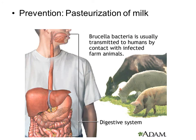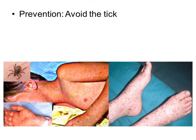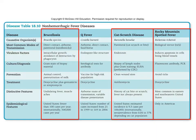Prevention of Brucellosis is through pasteurization of milk, as this bacteria is usually transmitted to humans by contact with animal products such as milk. The next bacterial infection is from Rickettsiae, which causes Rocky Mountain spotted fever — transmitted by the bite of a tick. Prevention is to avoid the tick and its bite. Table 18.10 summarizes the three infections that cause non-hemorrhagic fever.